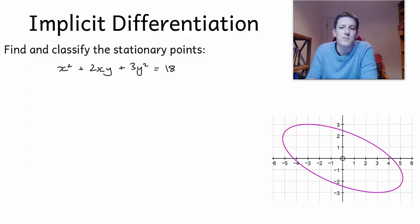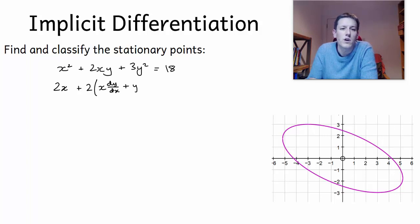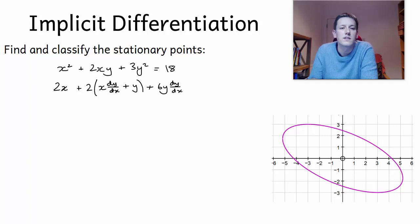So I'm effectively going to differentiate both sides with respect to x. The x squared term gives just 2x, and I've got 2 times the derivative of x times y, so I need to apply the product rule here, giving x multiplied by dy/dx plus 1 times y. I did that exact example in the previous video so go back to that if you're not sure. Then 3y squared differentiates to give 6y, and by the chain rule we multiply by dy/dx.